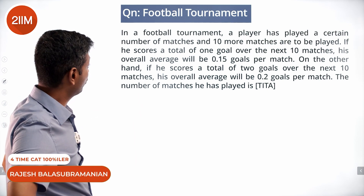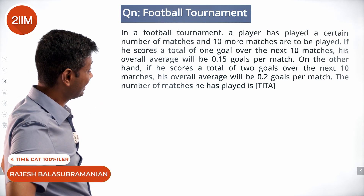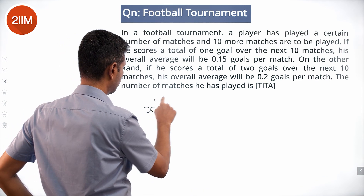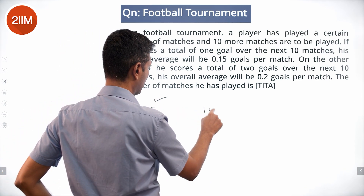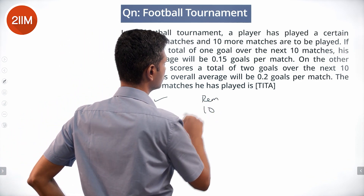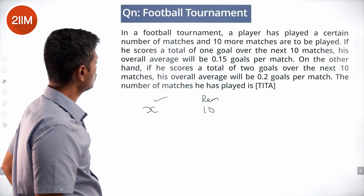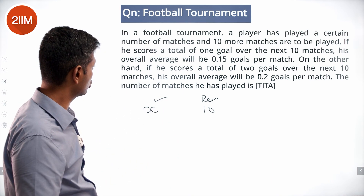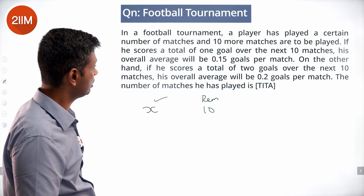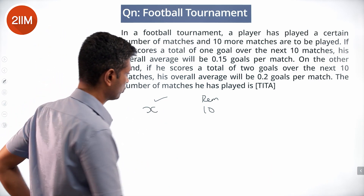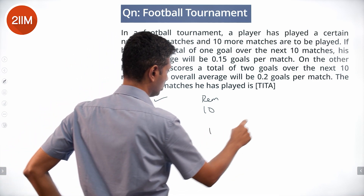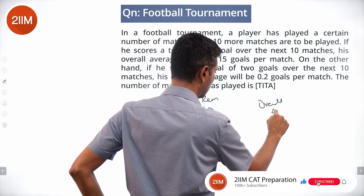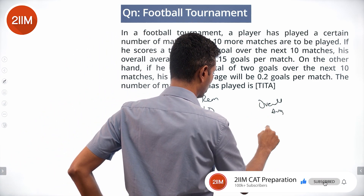In a football tournament, a player has played a certain number of matches — X have been played — and 10 more matches remain to be played. If he scores a total of 1 goal over the 10 matches, his overall average will be 0.15 goals per match.